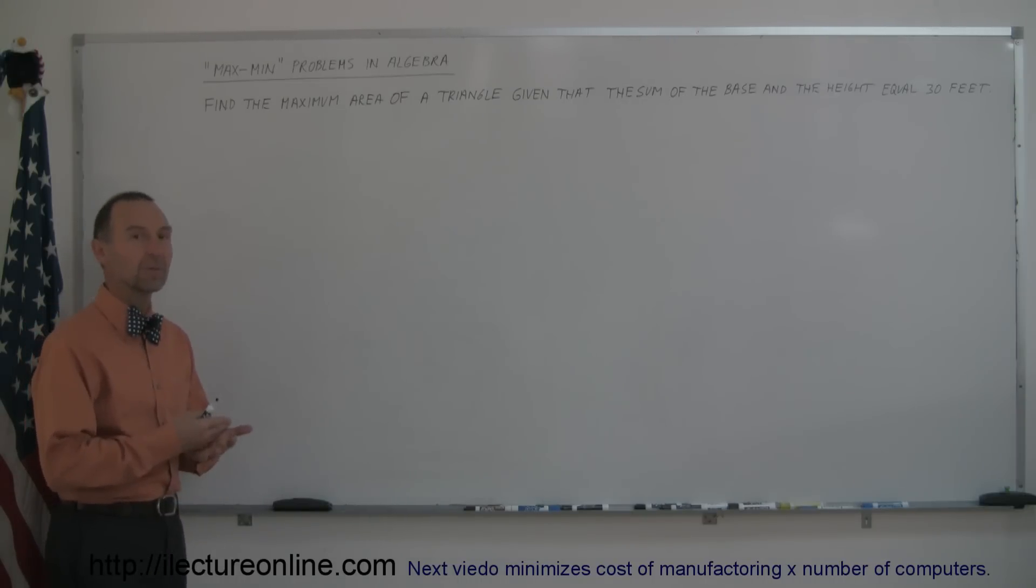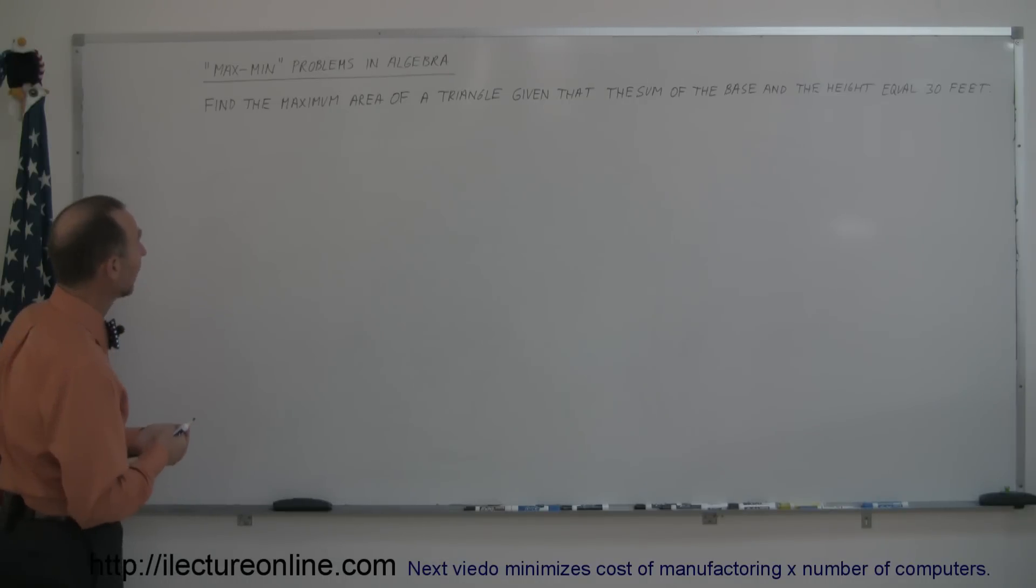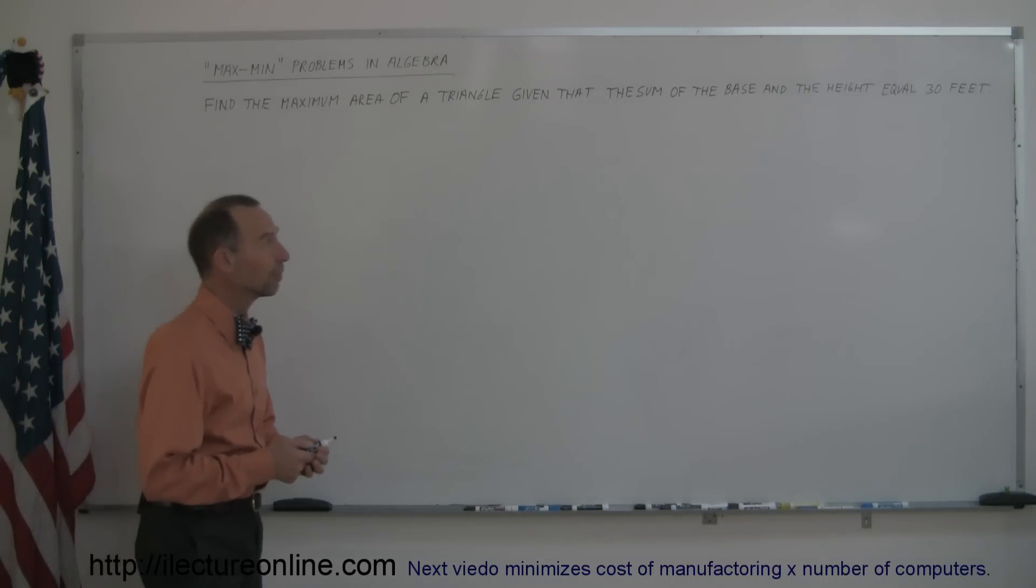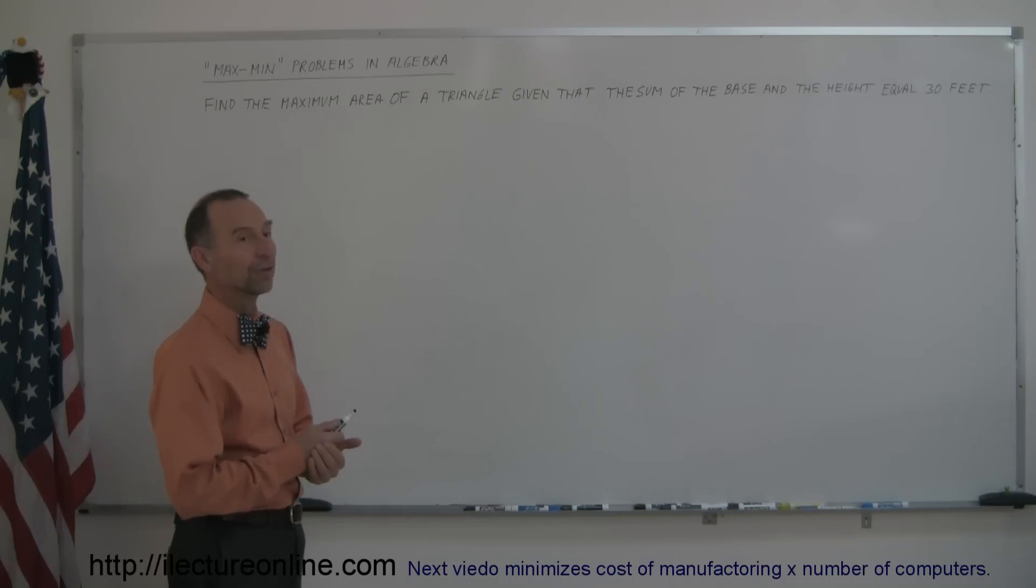Maximum-minimum stands for maximum and minimum, and typically they give you a scenario where you're trying to find the maximum of something or the minimum of something. In this case, it says find the maximum area of a triangle given that the sum of the base and the height equal 30 feet.